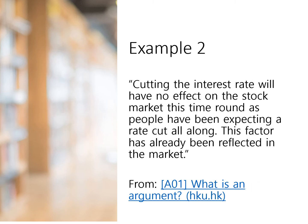For example: "Cutting the interest rate will have no effect on the stock market this time around, as people have been expecting a rate cut all along. This factor has already been reflected in the market." Pause the video and see if this contains an argument. This is trying to establish that cutting the interest rate will have no effect on the stock market — that's the conclusion. The second sentence, "this factor has already been reflected in the market," is the evidence or reason for thinking that the conclusion follows. So this is an argument.